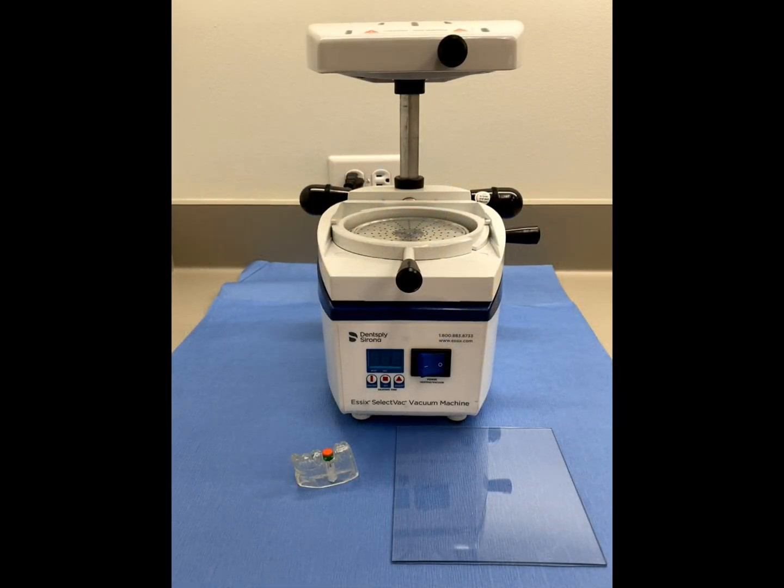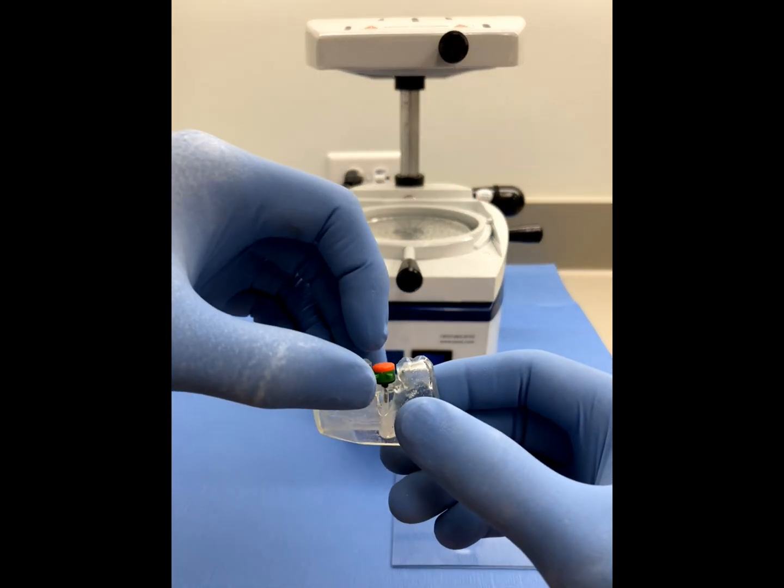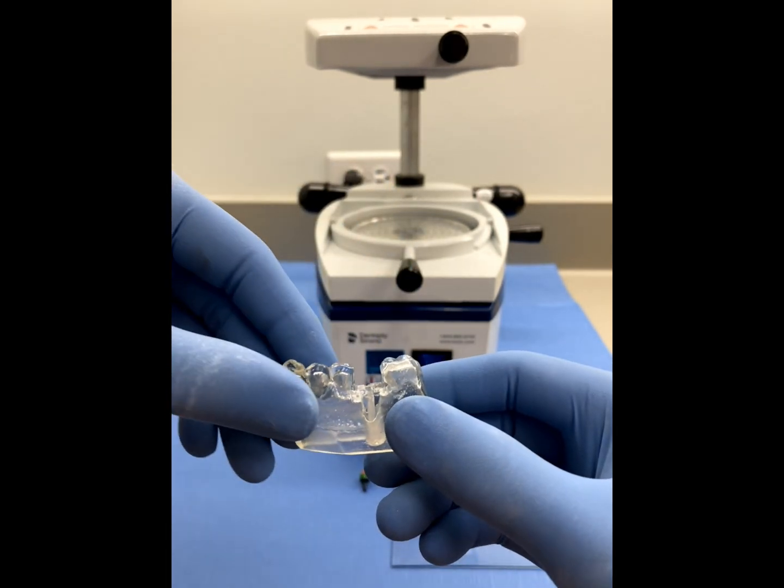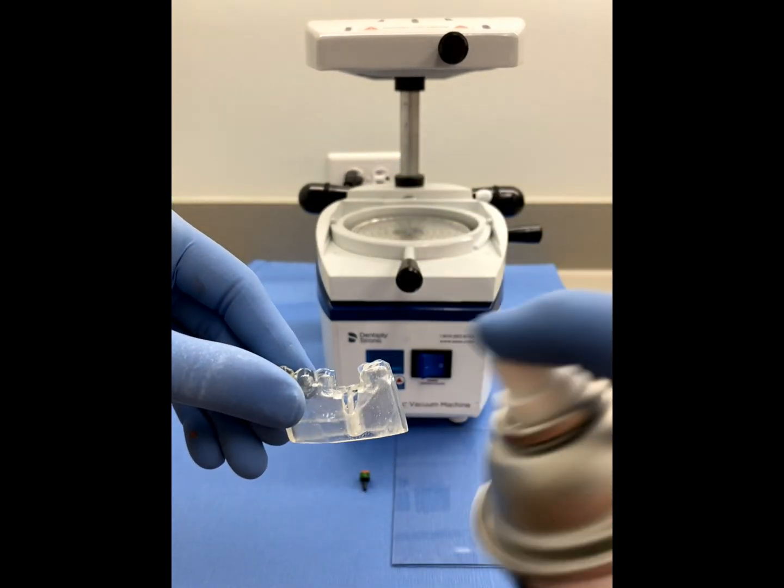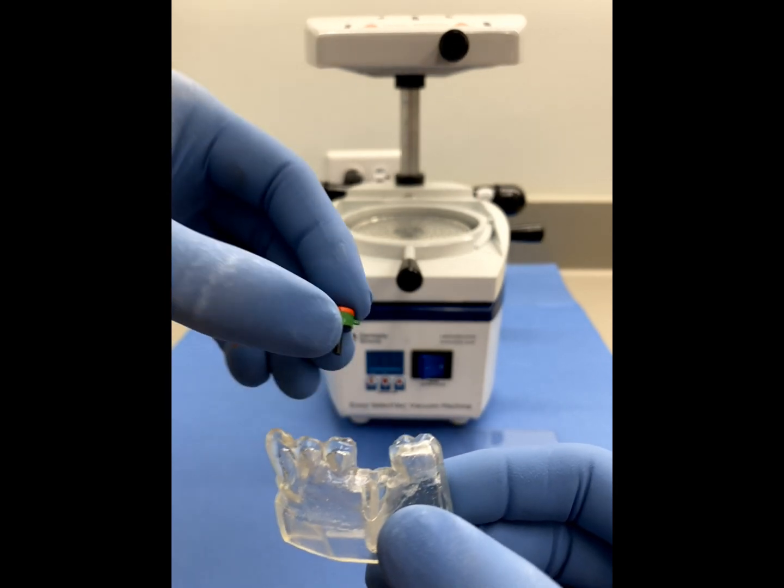The vacuum and or pressure forming process used to create a GRS surgical guide is no different than current protocols utilized in most dental offices and labs when making many common dental oral appliances. Begin by spraying just the model with a silicone separating medium and reinserting the GRS vacuum forming assembly into the printed model.